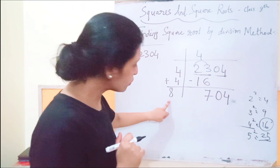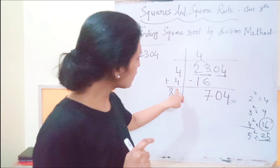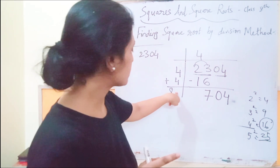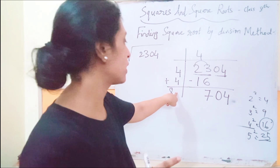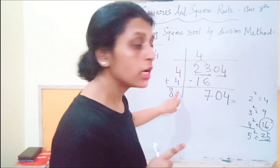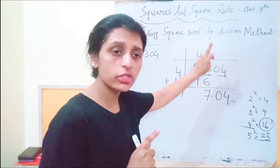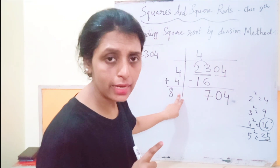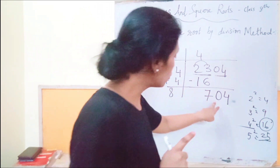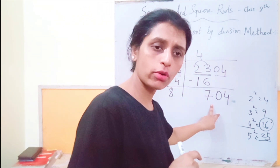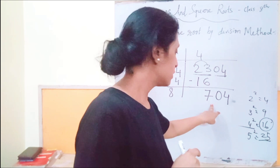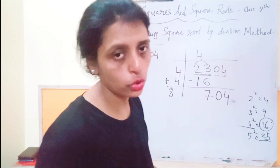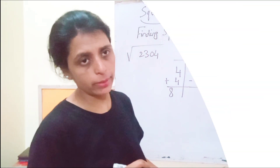In the next step, we have to place a digit next to 8 such that when we multiply that digit with the resulting number, we get 704 or the closest number less than or equal to 704.